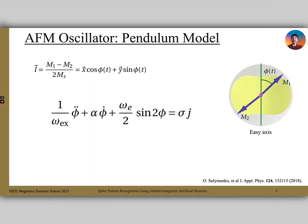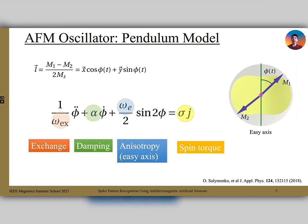The orientation of these sublattices can be described by using the angle of phi, which is the angle between the Néel vector and the easy axis. The derived equation for phi resembles the equation of a mechanical pendulum under a driving force, with the spin torque being the driving force. The most important part of this equation is that the exchange energy contributes an effective mass, which leads to the AFM oscillator having inertia.